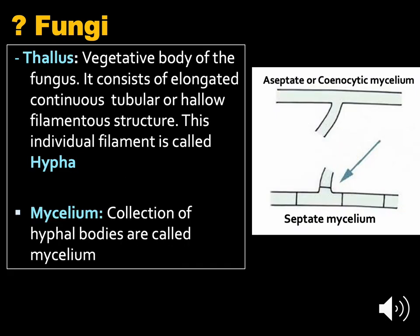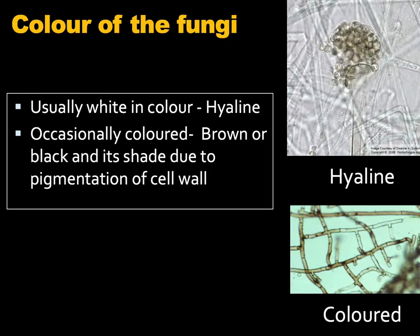Their branched somatic structures are typically surrounded by a cell wall containing chitin or cellulose, or both. To go deeper into fungi, we should understand a few terminologies. The thallus is the vegetative body of the fungus; it consists of elongated, continuous, tubular, hollow filamentous structures. These individual filaments are called hypha, and more than one is called hyphae — that is the plural form. Another terminology is mycelium: these are the collection of hyphae together, and mycelium may be aseptate (no septation) or septate (with septation).